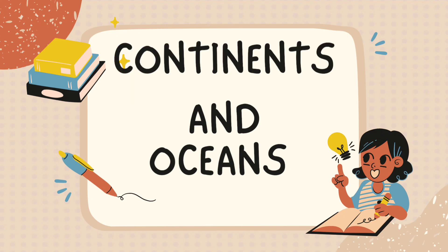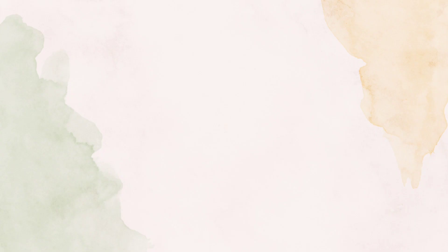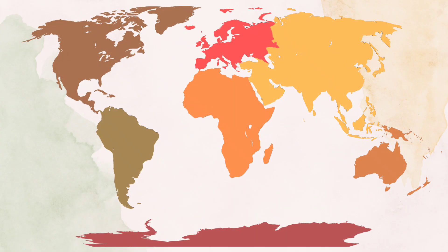There are seven continents and five oceans in the world. Let us see the seven continents. Asia — Asia is the largest continent in the world.